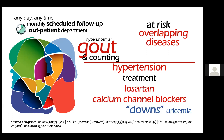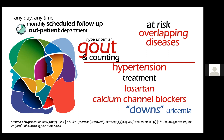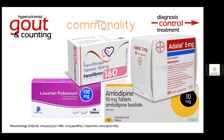When combining and individualizing treatment for a particular patient, the combination of amlodipine with enalapril makes sense for a black patient. But you can further substitute losartan for enalapril to take advantage of losartan's uric acid lowering — its uricosuric effect. These drugs share this benefit: losartan, amlodipine, nifedipine, and even triglyceride-lowering drugs.